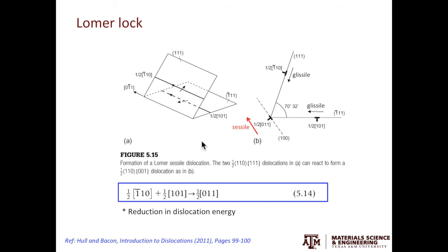There is a special name for such sessile configuration called Lomer lock. Lomer lock is one of the most important factors why you have strain hardening in FCC metals. It is interesting to note the formation of Lomer lock is energetically favored. You can look at the strain energy reduction. By forming a Lomer lock, you effectively reduce the strain energy by half.